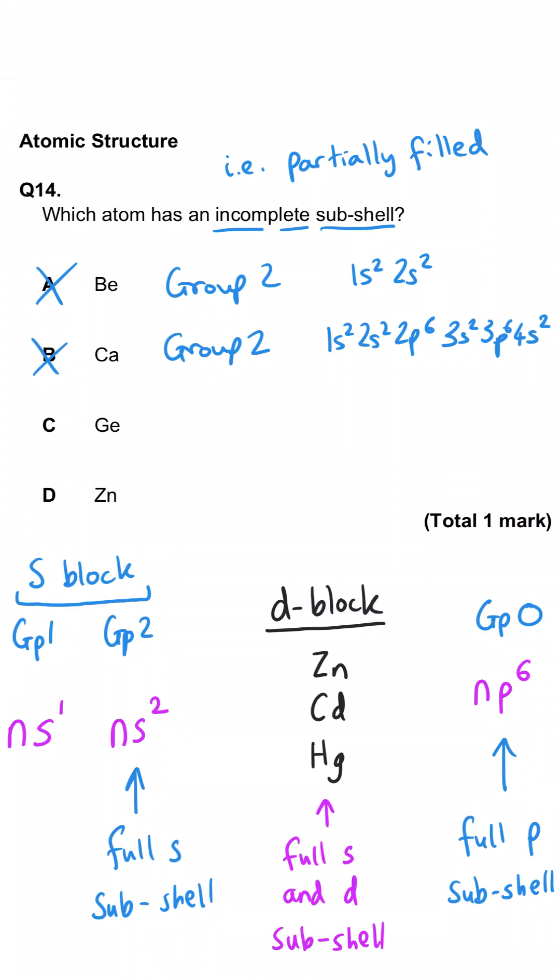Anything to the right of the D block will also have a full D subshell and a full S subshell. So that means we can rule out zinc. There are no noble gases here, but that was worth noting. And that means that germanium has to be the correct answer. It is in group 4, which means it will have two electrons in its P subshell, so it is incomplete.